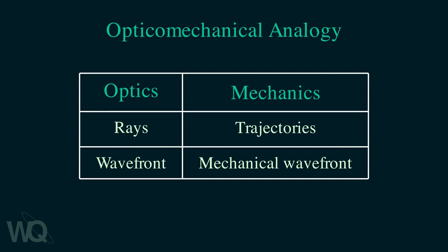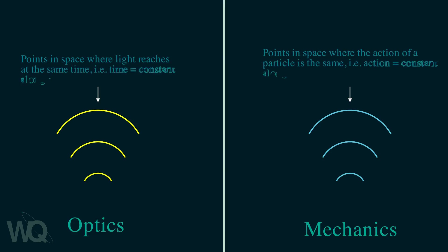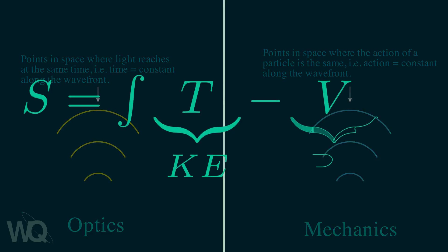In optics the wave front consists of points of constant time while this mechanical wave front in classical mechanics consists of points of constant action. The action is defined as follows. It is the integral of the difference between the kinetic and the potential energy.